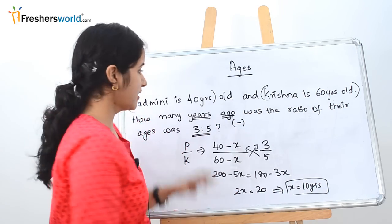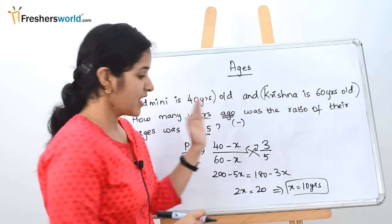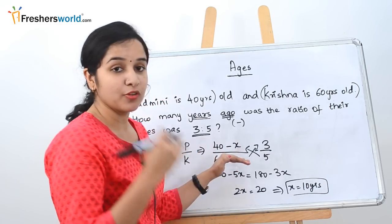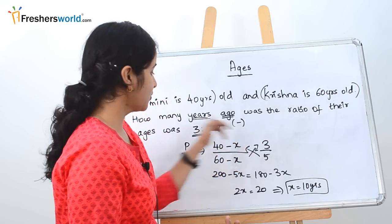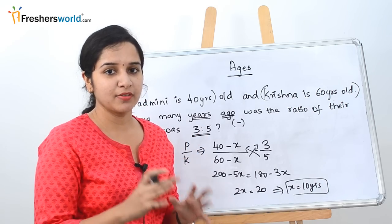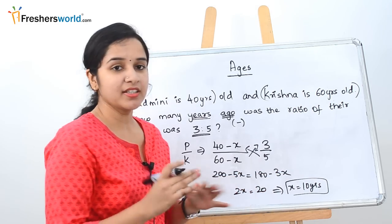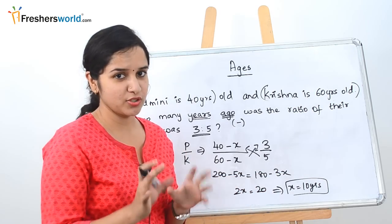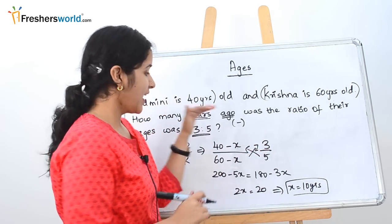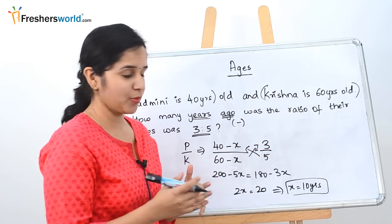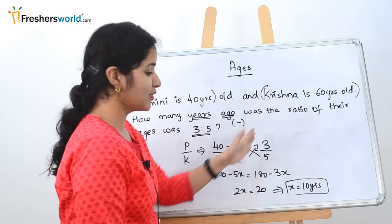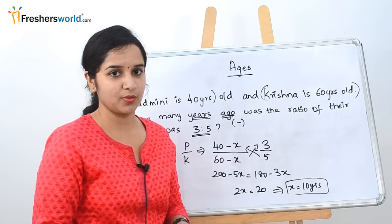So how did we solve it? We know their respective ages, put it as a fraction with x as the number of years ago, and equate it to the given ratio. Cross multiply and find x to get the years ago when the ratio was that value. Similarly, they may interchange the ages and give various ratio proportions — just follow the same method; only the values will change.